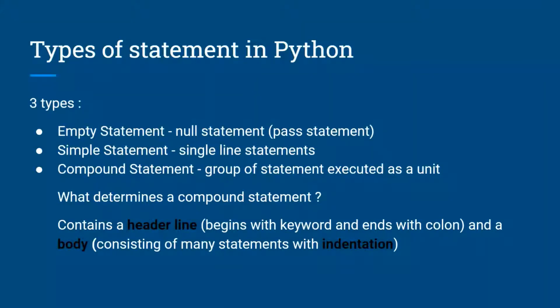First, let's understand the types of statements available in Python. There are three types. The first is called the empty statement, and it basically does nothing. You may wonder why it should exist — the answer is that the empty statement is used when the syntax of the language requires a statement but the logic doesn't. The keyword to indicate this empty statement is called 'pass'. Keywords are reserved words in Python with a predetermined function, and they always start with a small letter.